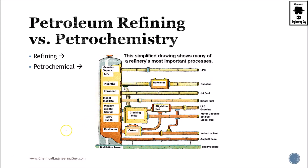Before we continue with the petrochemistry course, or petrochemical industry part, I want to ensure that you know the difference between petroleum refining and petrochemistry. Petroleum refining is much more into the part of purifying crude oil. Crude oil goes in, it has been desalted, and now it's going to be separated into several parts or fractions. That's why it's also called a distillation column or fractionation column.